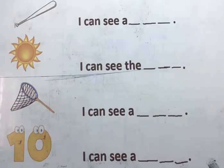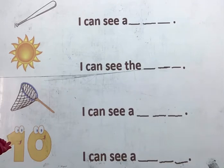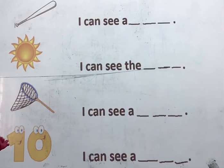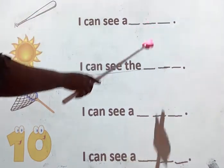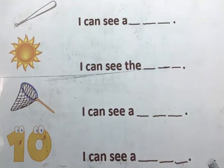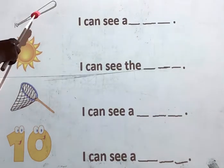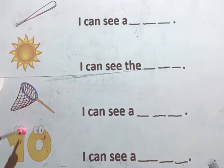Hello students! Today we are going to learn how to write missing words in sentences. We are going to read the sentences, look at the picture beside it, and then write the word. Before we begin reading the sentences, I'm going to tell you the names of all the pictures, okay?